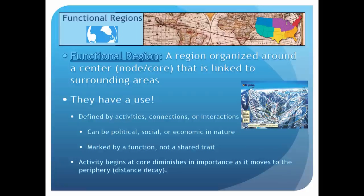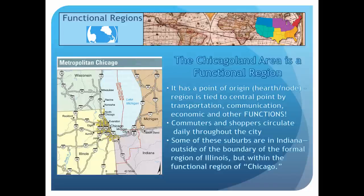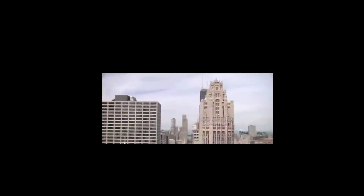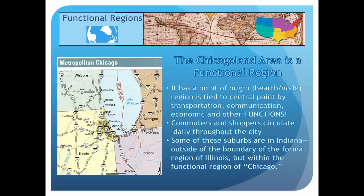Some of the uses in functional regions include transportation, communication, utilities, and economic associations including manufacturing or retail. The Chicagoland area is a great example of a functional region. Chicago, with its highways, railways, Great Lakes shipping, airlines, and telecommunications, is a focal point in the north central region of the United States. The core of that functional region is downtown Chicago, and the periphery extends out into other states including Indiana, Michigan, and Wisconsin.